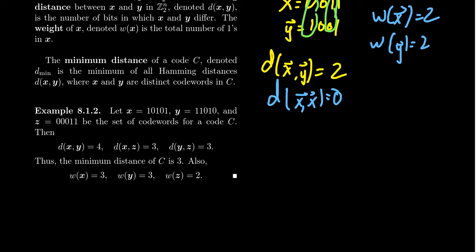If we look at X and Z, they differ on the first bit, they agree on the second, they disagree on the third, they disagree on the fourth, but they do agree on the fifth bit, so the distance would be 3.